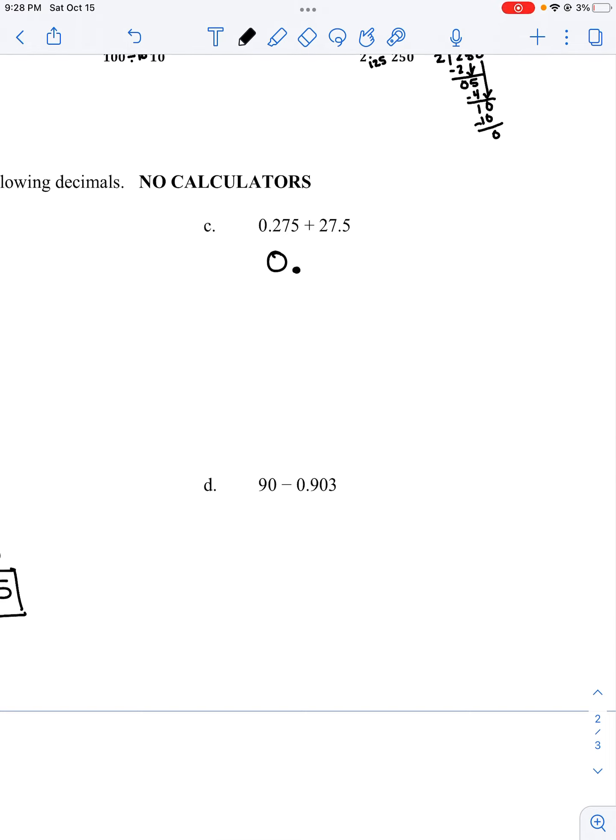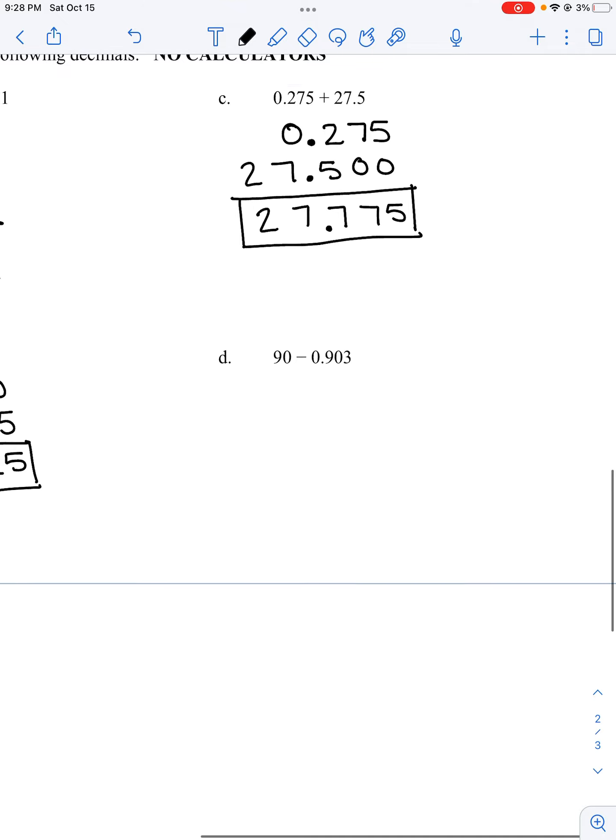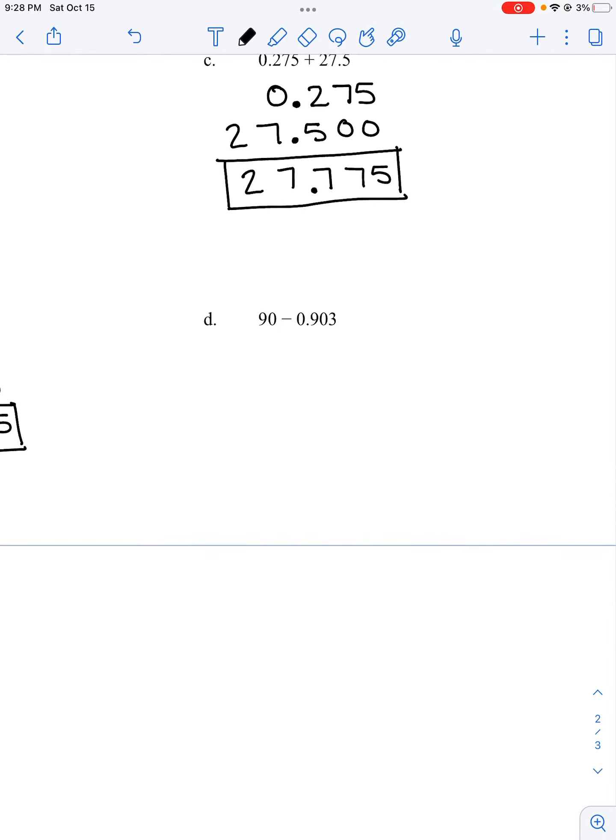Part C I'm adding. Remember I line up my decimal points. 5 plus 0 is 5, 7 plus 0 is 7, 5 plus 2 is 7, 7 plus 0 is 7, 2 plus 0 is 2. 27 and 775 thousandths.